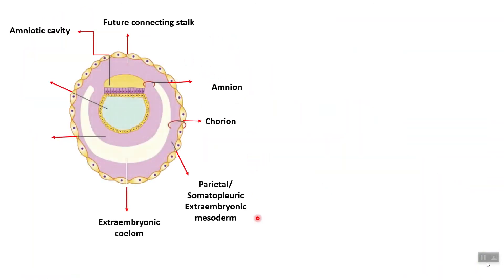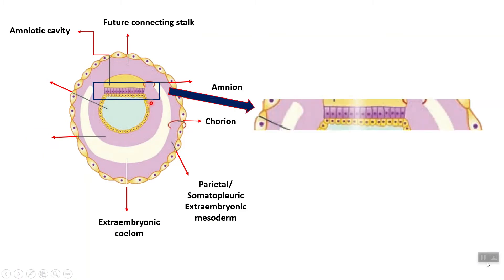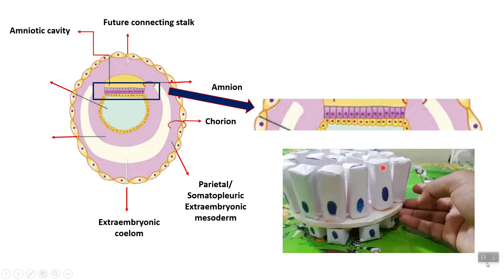In the last class we learned about all these structures. To understand the notochord, we need to know about the embryonic disc. The epiblast consists of columnar cells, while the endoderm — the hypoblast — consists of cuboidal cells. These are three-dimensional structures. The columnar cells are tightly packed with little space between them, while here we have the cuboidal cells.